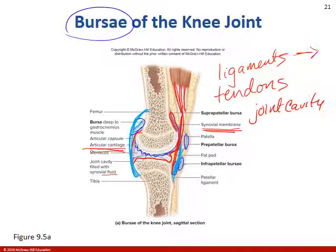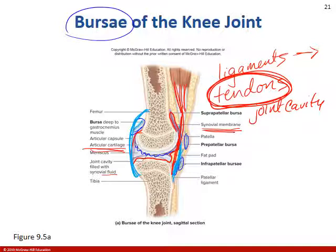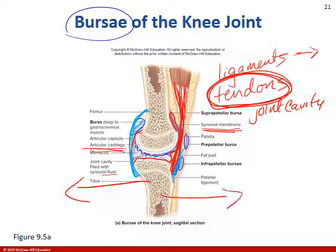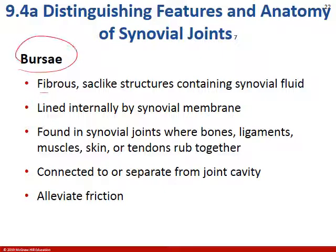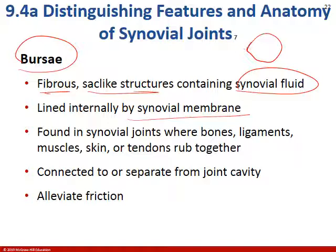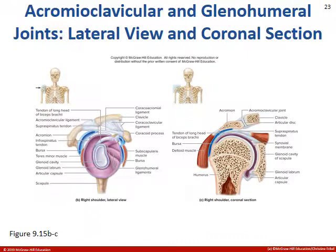One thing to think about — we may not be able to control our ligaments, but what we really work on is tendons. When you do any stability or flexibility exercises like yoga, you're lubricating these joint cavities and helping to create a taut or tight tendon. If the tendon is tight against your joint cavity, you're less likely to have slippage inside that joint cavity. Bursa are fibrous sac-like structures containing synovial fluid, lined by the synovial membrane. They can be connected to or separate from the joint cavity and help alleviate friction.